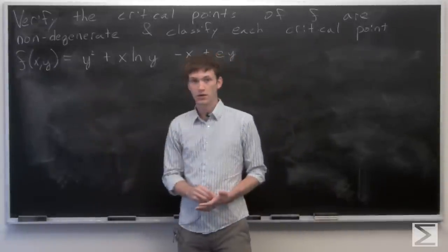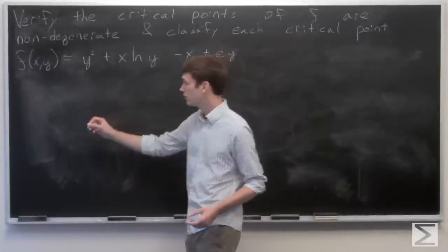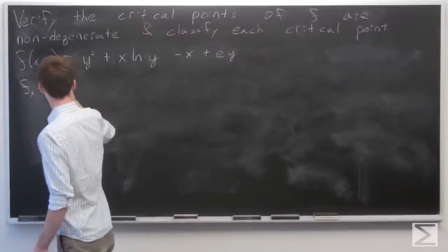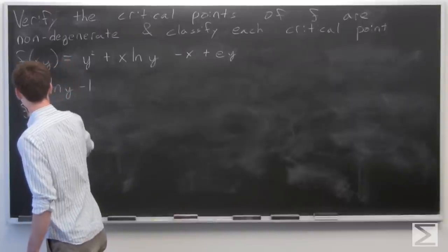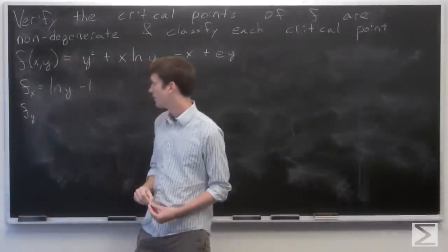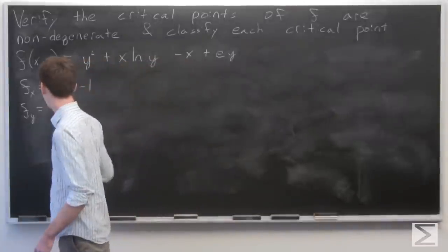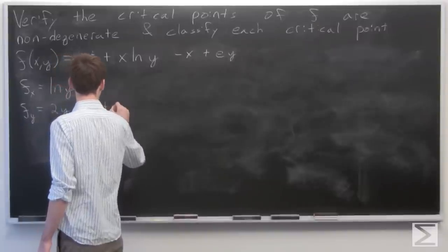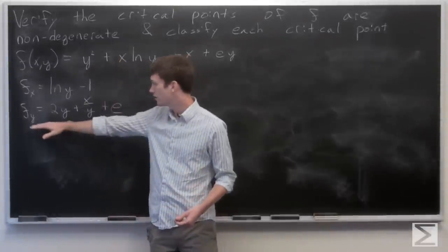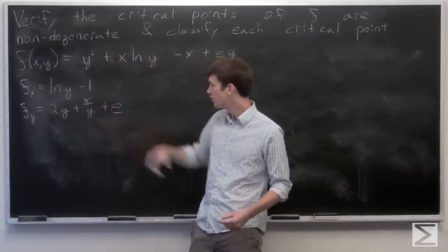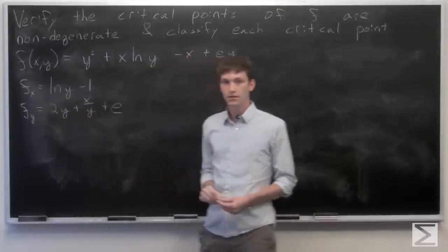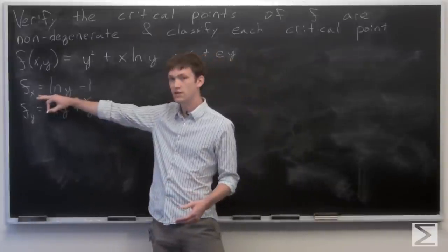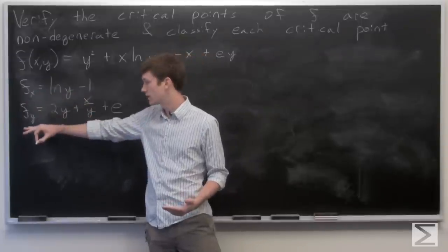First we want to calculate the critical points, so we'll take the partial derivative of f with respect to x, and we get the natural log of y minus 1. Then we calculate the partial derivative of f with respect to y, and we get 2y plus x over y plus e. We want to set the gradient vector equal to zero, which means each of its components — the partial derivatives with respect to x and y — are zero.